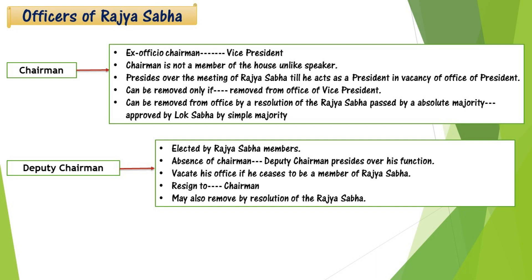Now the office of Rajya Sabha — the Chairman and Deputy Chairman. The Chairman is the ex-officio chairman, i.e., the Vice President. The Chairman is not a part of Rajya Sabha. The Chairman conducts the meetings of Rajya Sabha as long as they are not acting as President. If the Vice President is removed from that post, they are removed from this post too. Removal happens when a resolution is passed in Rajya Sabha by absolute majority and approved in Lok Sabha by simple majority. The Deputy Chairman is a Rajya Sabha member elected by members. In the absence of the Chairman, the Deputy Chairman functions. They must vacate the office if they are no longer a Rajya Sabha member, and can also be removed by resolution.